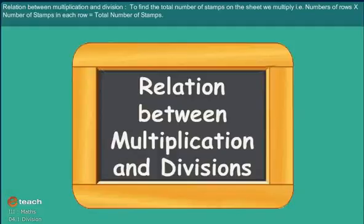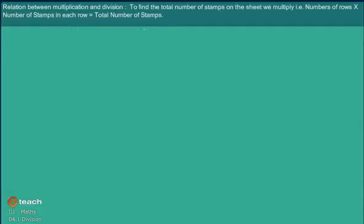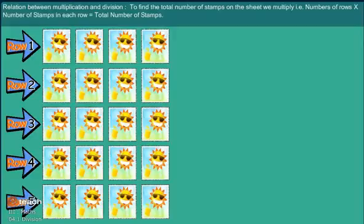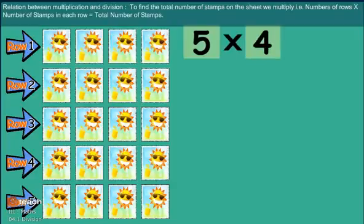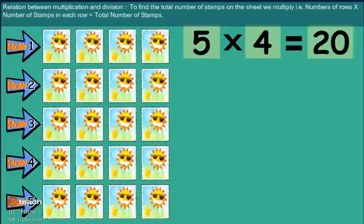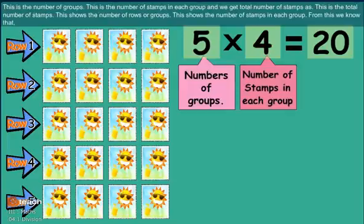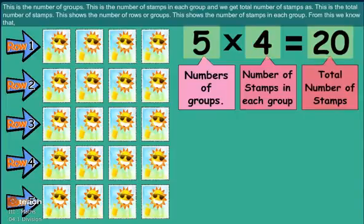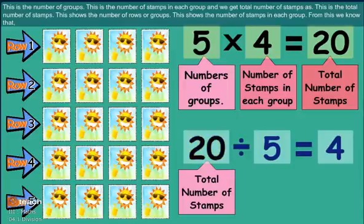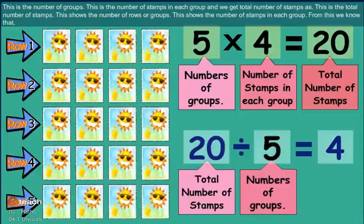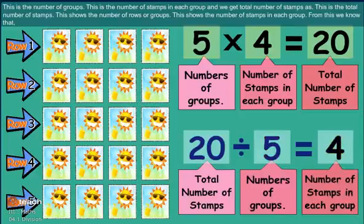Relation between multiplication and division. To find the total number of stamps on a sheet, we multiply: number of rows multiplied by number of stamps in each row equals total number of stamps. This is the number of groups, this is the number of stamps in each group, and we get the total number of stamps.